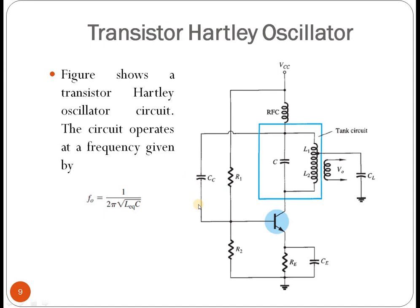In the transistor Hartley oscillator, a transistor is used as the main active device. The tank circuit consists of L1, L2, and a capacitor as the basic resonant elements, with R1 and R2 and other components used for biasing. The frequency of oscillation is the same form: F₀ = 1 / (2π√(L_eq·C)), from which you can find the oscillation frequency of the given circuit.